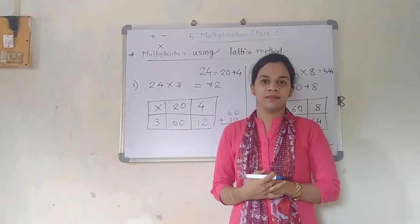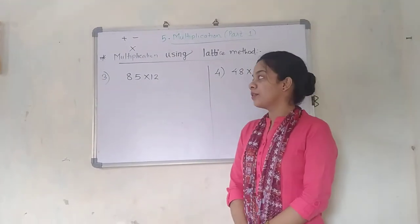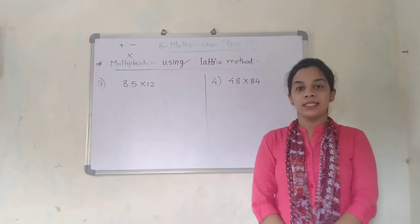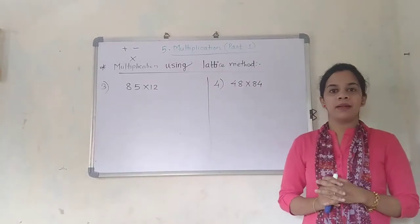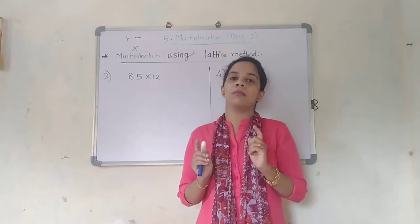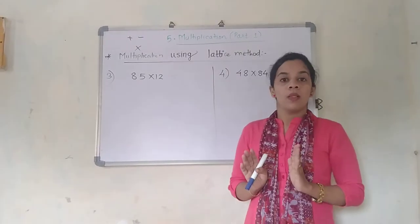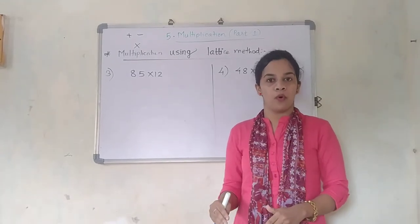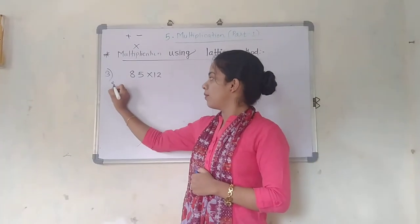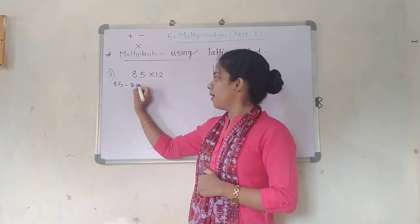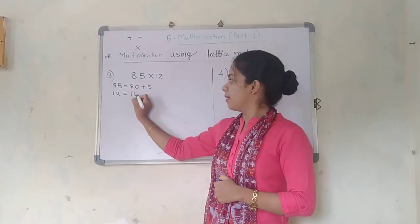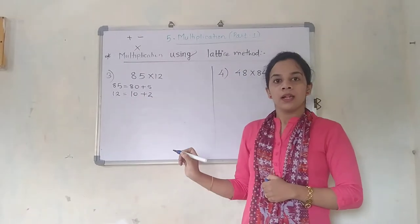We will solve 2 more questions. Just see near the board. The third question is 85 into 12, and the fourth is 48 into 84 — that is 85 multiplied by 12 and 48 multiplied by 84. Earlier, one was a 2-digit number and one was a 1-digit number; now we are going to expand both numbers. 85 can be written as 80 plus 5, and 12 will be written as 10 plus 2.